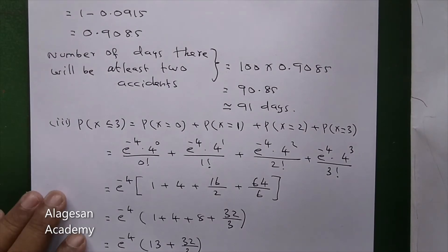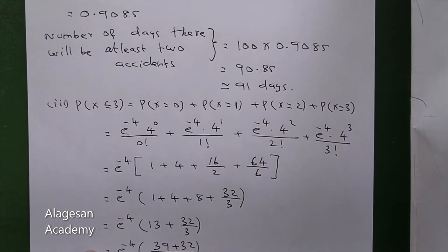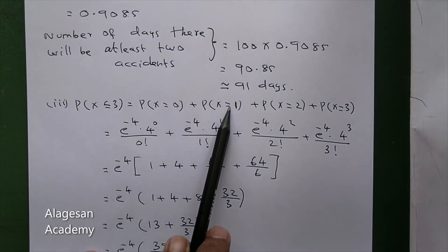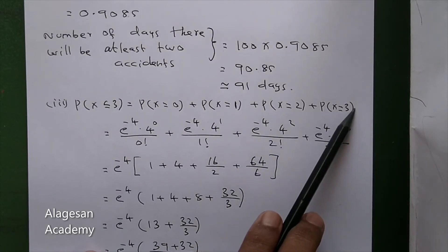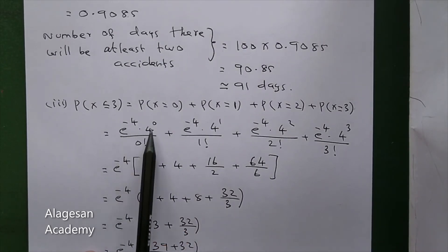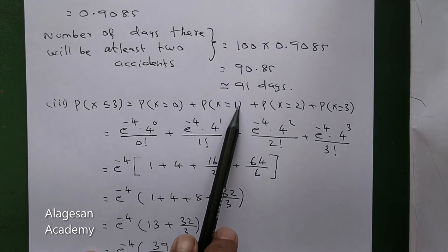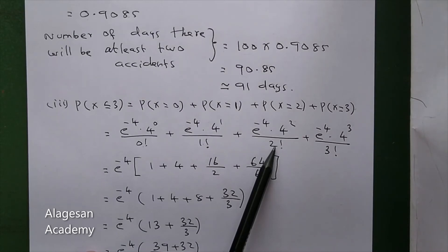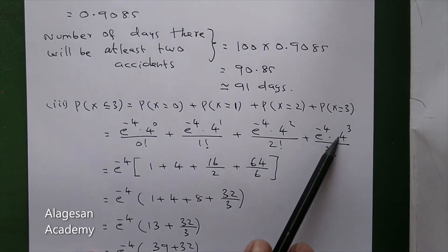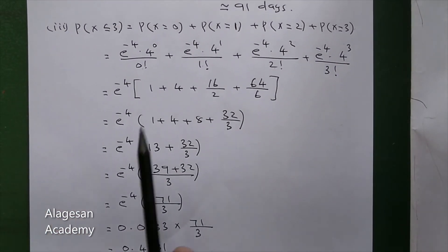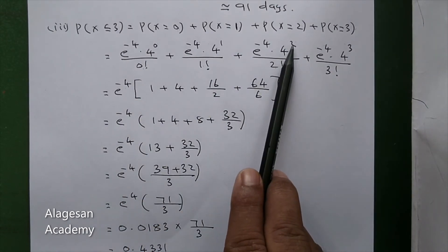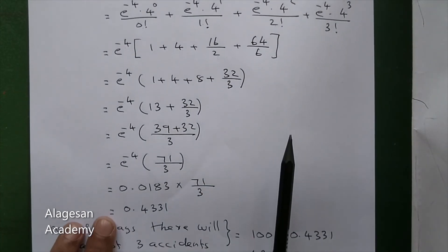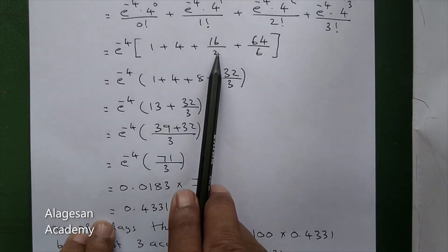Third question: number of days there will be at most 3 accidents. P of X less than or equal to 3 equals P(X=0) + P(X=1) + P(X=2) + P(X=3). P(X=0) is e to the power minus 4 times 4 to the power 0 by 0 factorial. P(X=1) is e to the power minus 4 times 4 by 1 factorial. P(X=2) is e to the power minus 4 times 16 by 2 factorial. P(X=3) is e to the power minus 4 times 64 by 6.